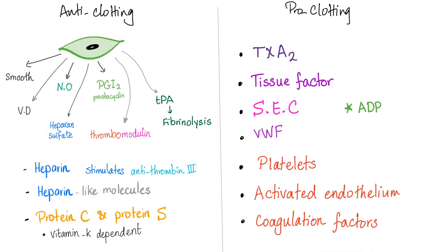The endothelium produces heparin-like molecules such as heparan sulfate, which stimulates antithrombin 3, which inactivates the serine proteases. What are the serine proteases? Factors 7, 9, 10, 11, and 12.